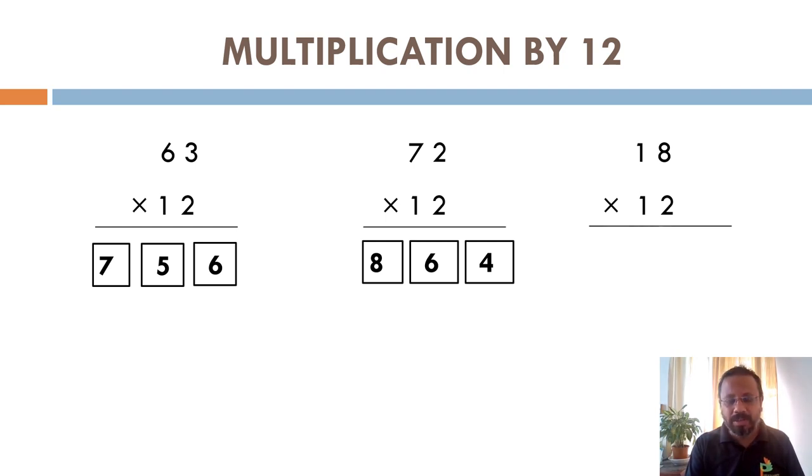18 times 12. Here double of 8 is 16 carry-over 1. So double of 1 is 2. 2 plus 1 is 3. 3 plus 8 is 11. Again carry-over 1 and that carry-over I will add into 1. So 1 plus 1 is 2. So our final answer will be 216.